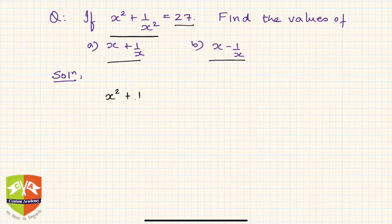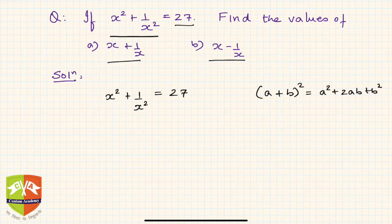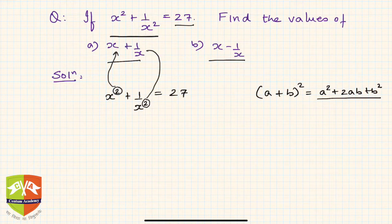What is given: x squared plus 1 upon x squared is equal to 27. Now if you remember, we have seen such identities before. Such terms were expressed using the identity (a + b) whole squared, which equals a squared plus 2ab plus b squared. Notice there is a power of 2 in the expanded form, and then it has to be reduced to power 1 on x.